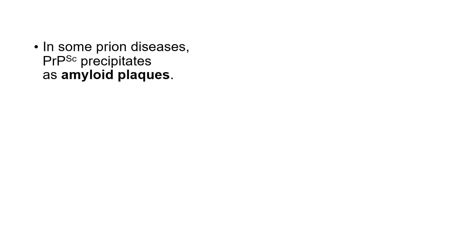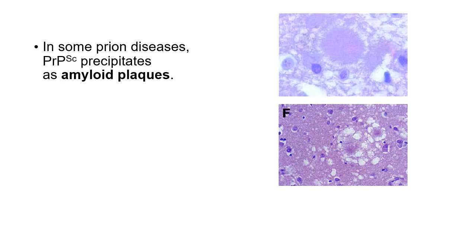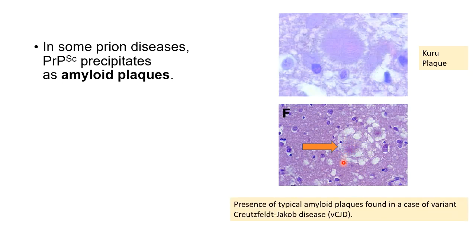In some prion diseases, PRPSC precipitates as amyloid plaques. The Kuru plaque shows an amyloid plaque with characteristic radiating spicules. By contrast, the variant CJD plaque shows an amyloid plaque characteristically surrounded by vacuoles — vacuolar degeneration in the neuropil around the plaque. This is how we differentiate between Kuru plaques and variant CJD-associated plaques in the cerebellum.